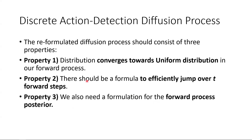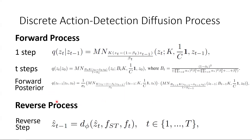Yet, reformulating the diffusion process is not straightforward, and we find that the reformulated diffusion process should consist of three properties. Property one is that the distribution should converge towards a uniform distribution in the forward process — a totally noisy and uncertain discrete distribution. Property two, there should be a formula to efficiently jump over forward steps. And property three, we should have a formulation for the forward process posterior. Properties two and three are properties that the standard diffusion model also relies on. Therefore, we formulate the forward and reverse process by adding noise according to a multinomial distribution. Please refer to the paper for all the details.